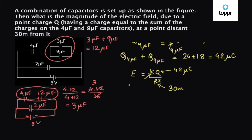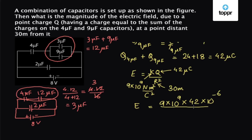K is 9 into 10 to the power 9 newton meter squared per coulomb squared. So we have E equals 9 into 10 to the power 9 into 42 into 10 to the power minus 6, divided by 30 squared. Simplifying: 9 cancels with part of 900, leaving us with 420 newton per coulomb. So the electric field due to point charge Q, which is the sum of the charges on the 4 microfarad and 9 microfarad capacitors, at a point 30 meters away, is 420 newton per coulomb.